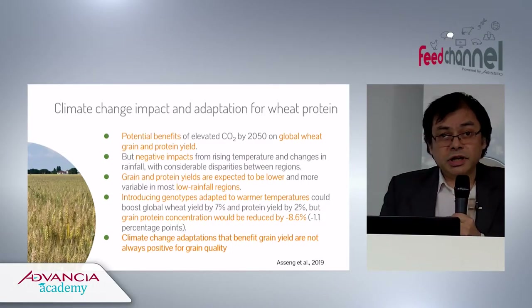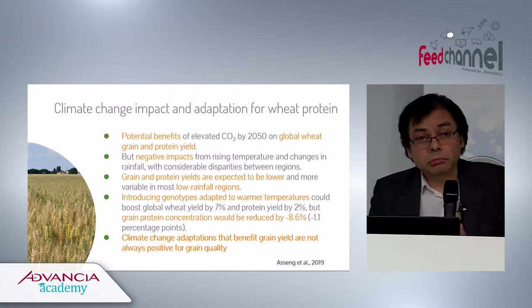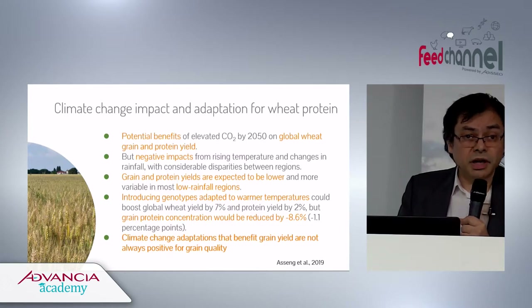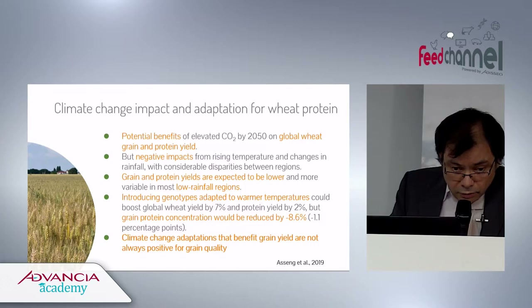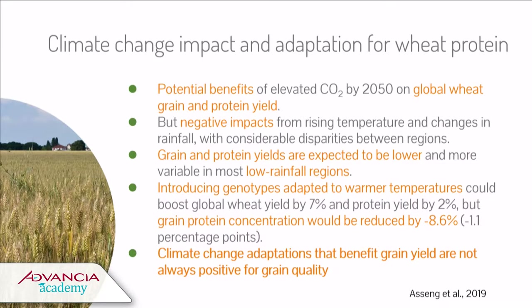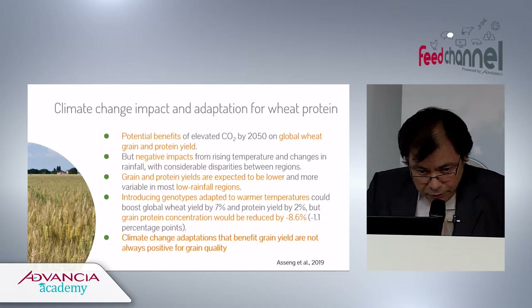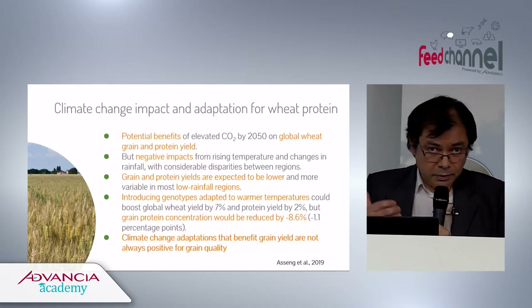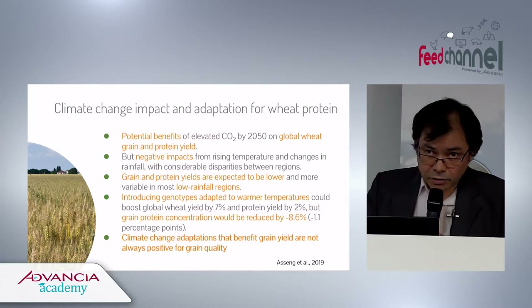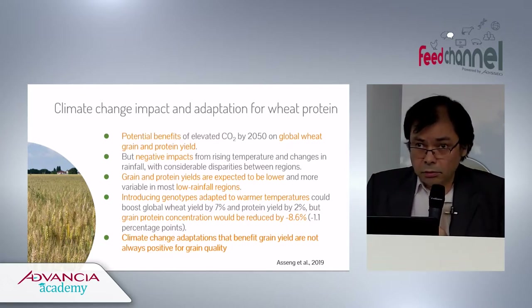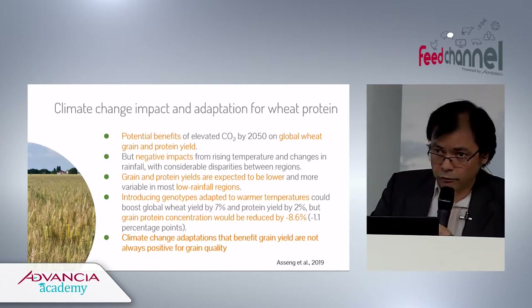A very recent paper examined what would happen with climate change and what adaptations could be expected. There are global potential benefits in wheat yield, including protein yield, but there are negative impacts from rising temperature and rainfall, particularly in low-rainfall regions. Even when using cultivar types better suited to rising temperatures, there may be some negative effects on crude protein.